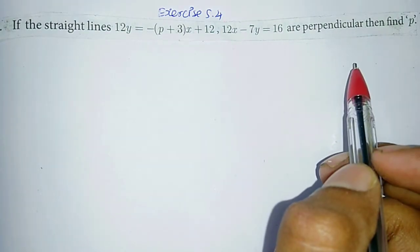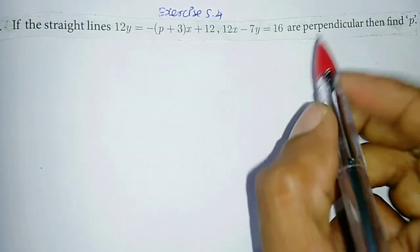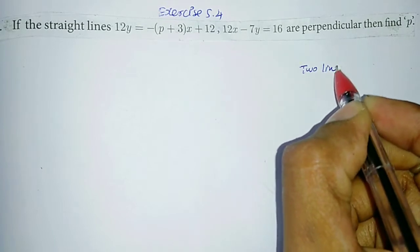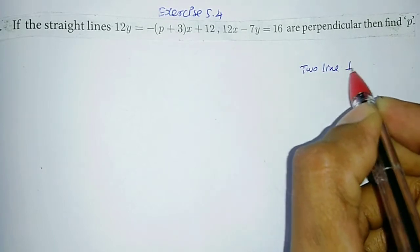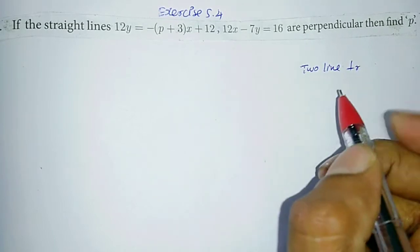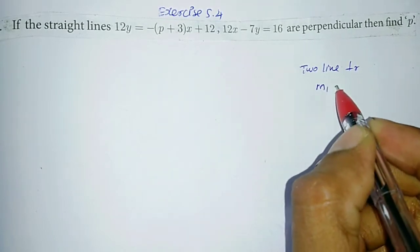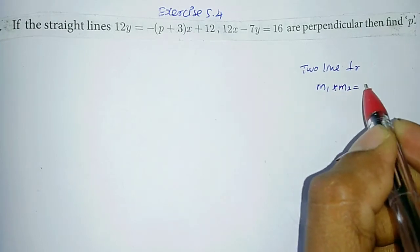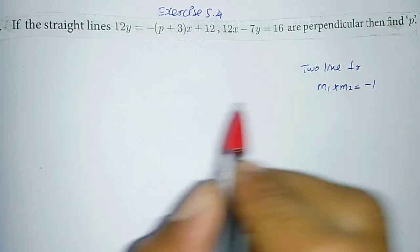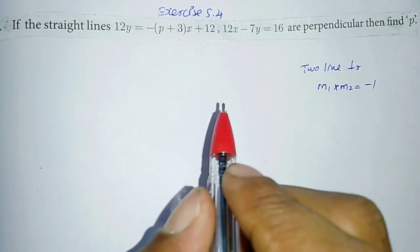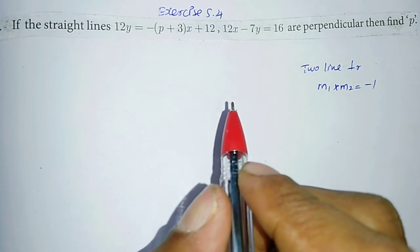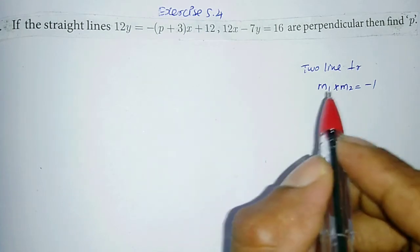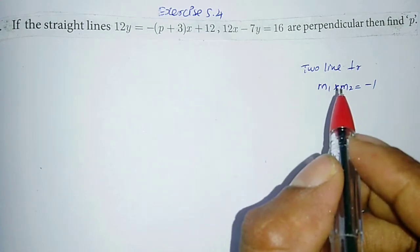Using that condition, we will find the value of p. When 2 lines are perpendicular, the condition we know is M1 into M2 is equal to minus 1. Using this formula, we are going to find p. So slope must be found from the equations.